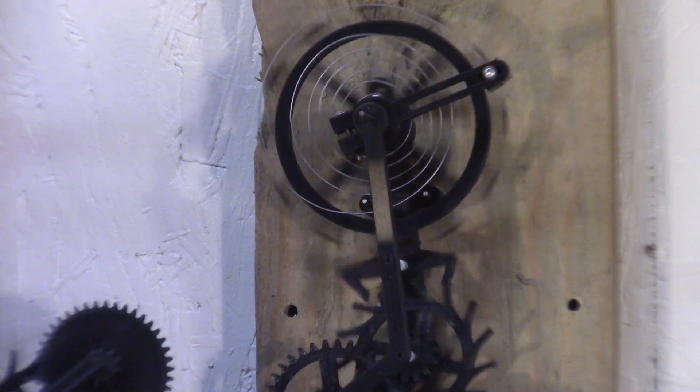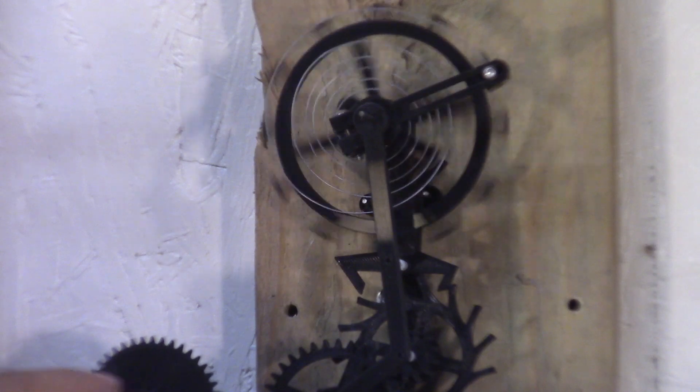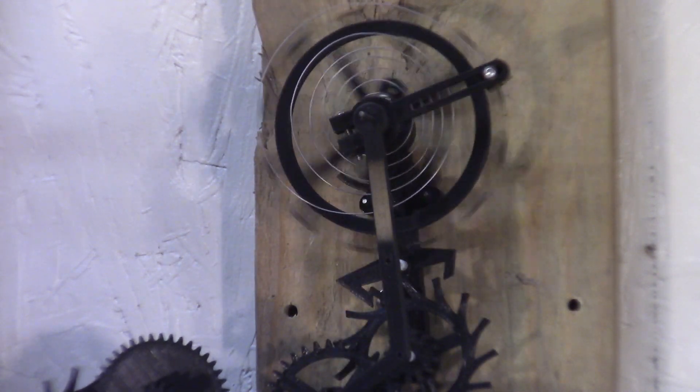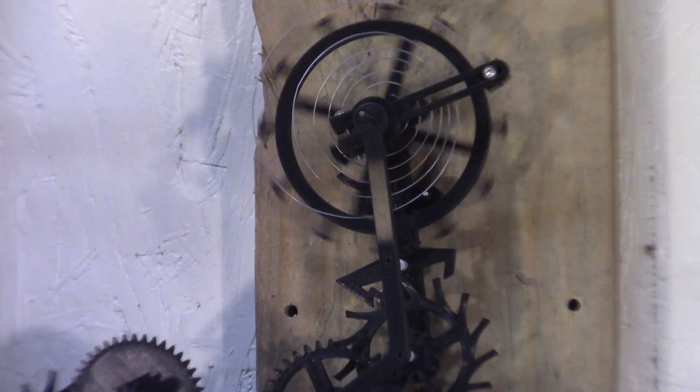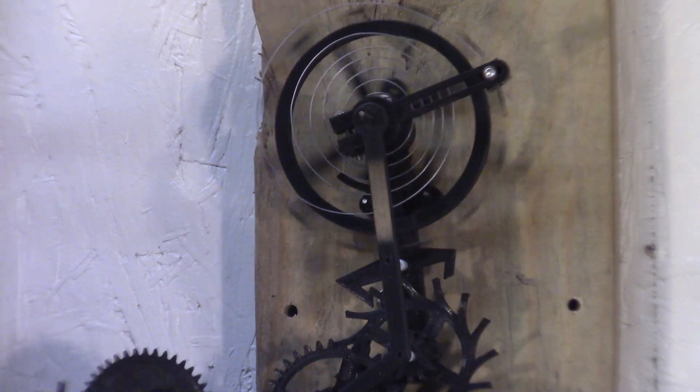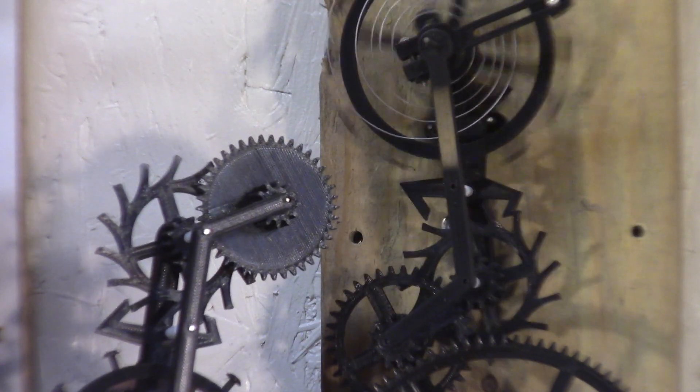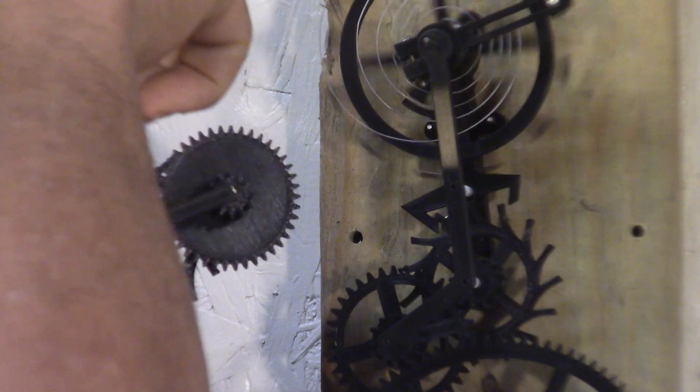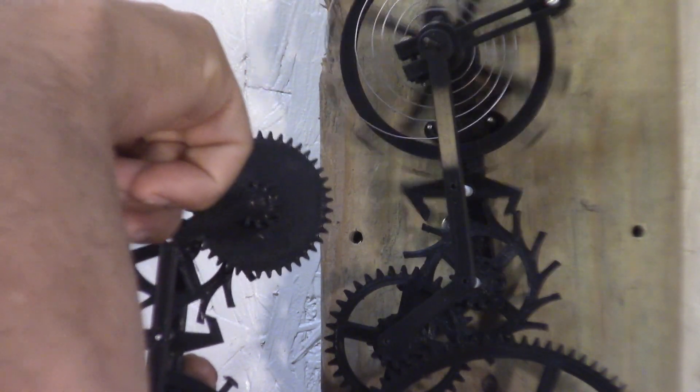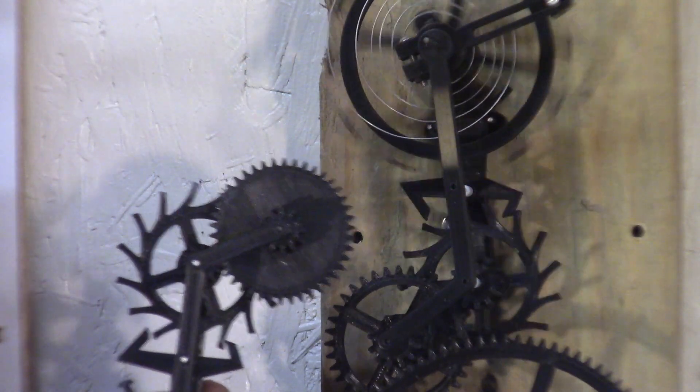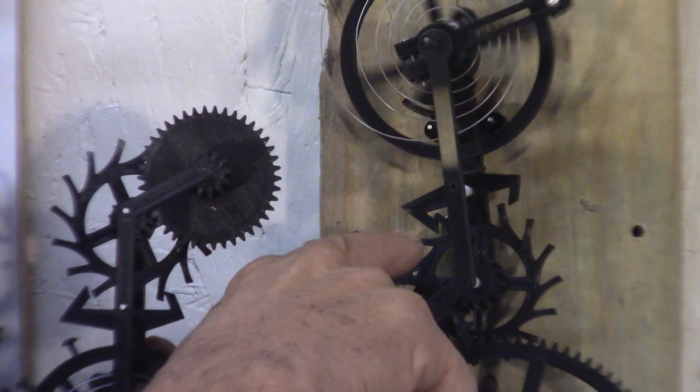The interesting thing, I did a try with model 1.2 gears here, and it was actually not as good as a 1.5, model 1.5. The bigger gears are more efficient. Interesting. I did a try with model 1.2, from this gear to the escape wheel, but it didn't work as well as the 1.5 that I'm using here.